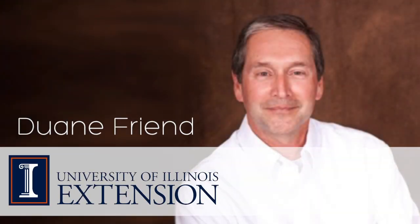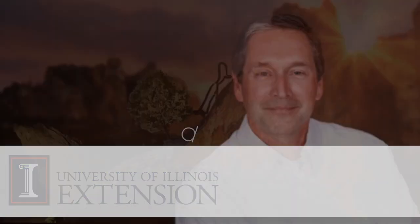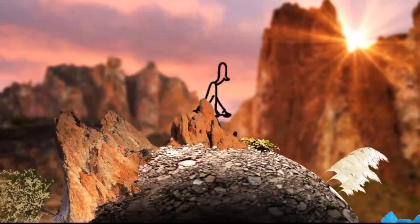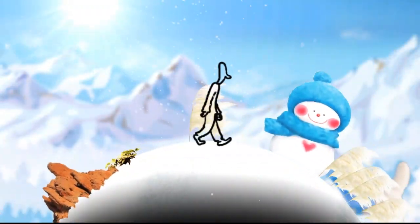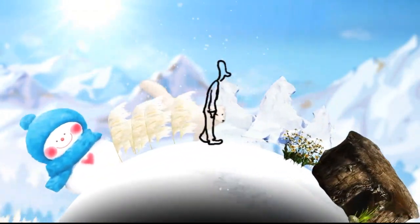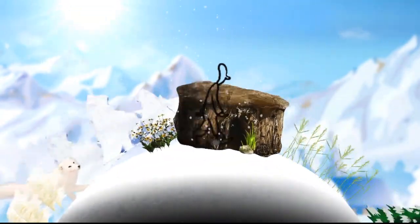This is Duane Friend with University of Illinois Extension. If we did not have the benefit of sunlight, the earth would be a cold, frozen mass. Almost all energy that we have or use on the earth can be traced back to sunlight.